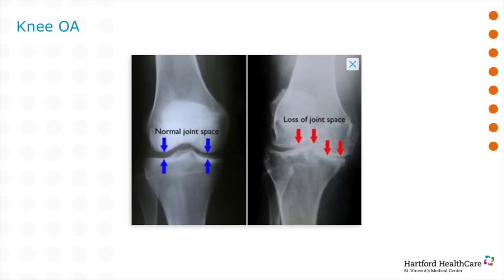Here are x-rays demonstrating a normal knee on the left and an osteoarthritic knee on the right. The radiographic hallmarks of an osteoarthritic knee include loss of joint space, deformity, bone spur formation, or hardening of the bone.